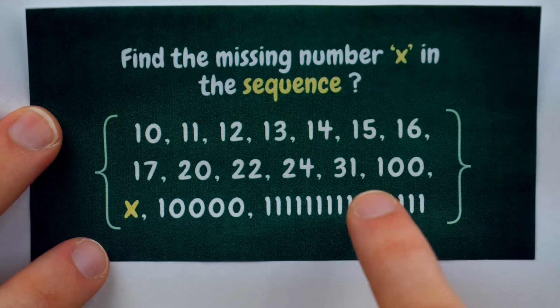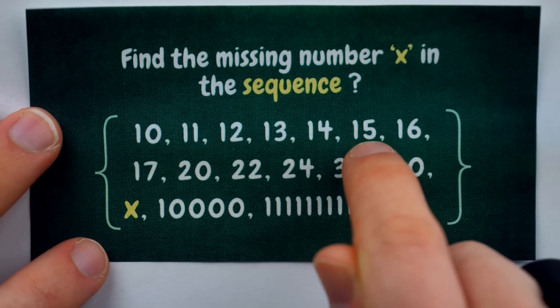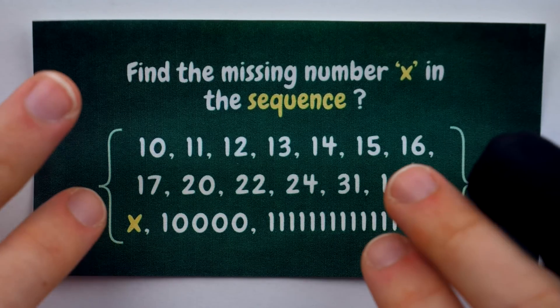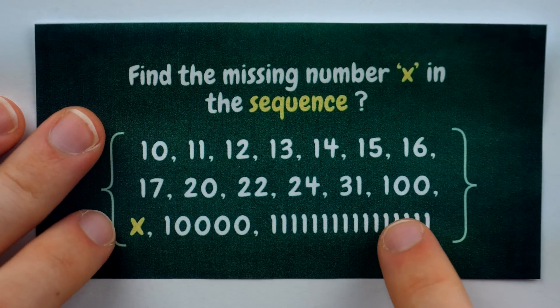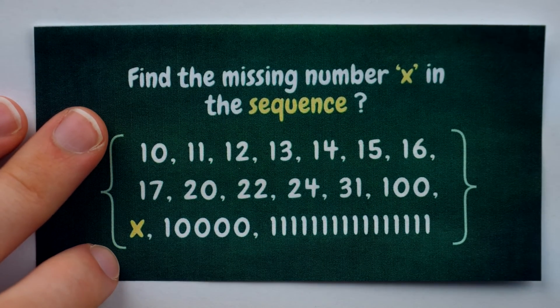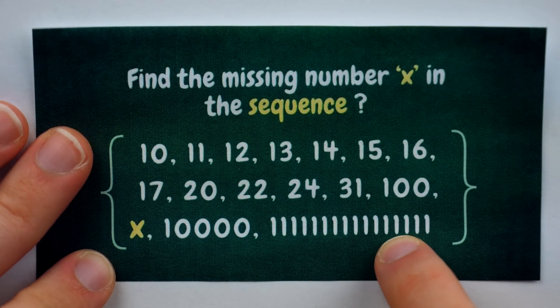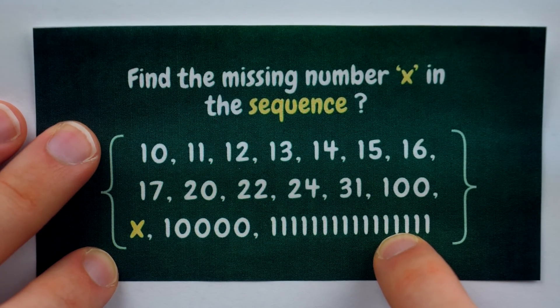Interestingly, 16 is also exactly the number of terms that we have here in this sequence. Then, having in mind that this sequence certainly looks peculiar, there are 16 terms, this term consists of 16 1s, we're starting to piece the clues together.